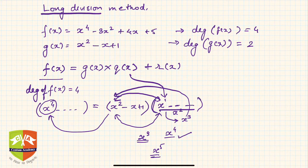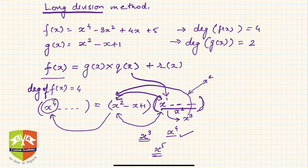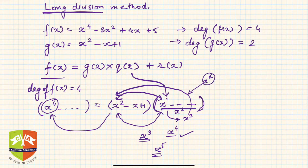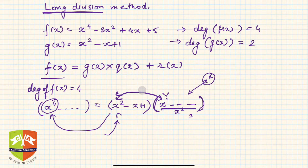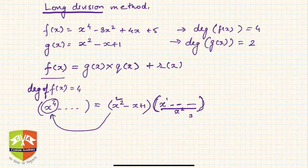So the leading term of q(x) must be x². It cannot be higher (like x³) because that would produce x⁵ in the product, which is not present in f(x). Certainly x² must be there, and lower degree terms are also possible. This is because if the divisor has x² in it, the quotient must also have x² — only then can we equate the degrees on both sides.